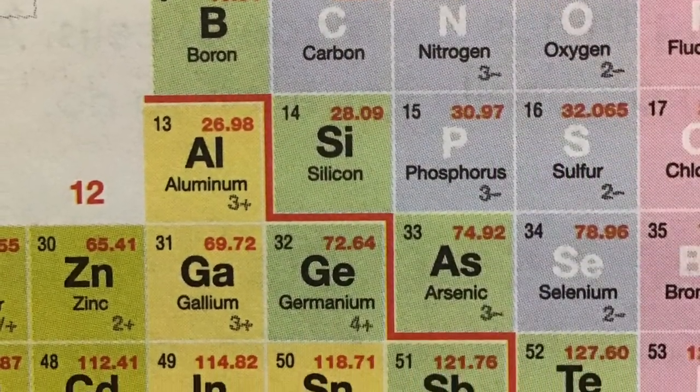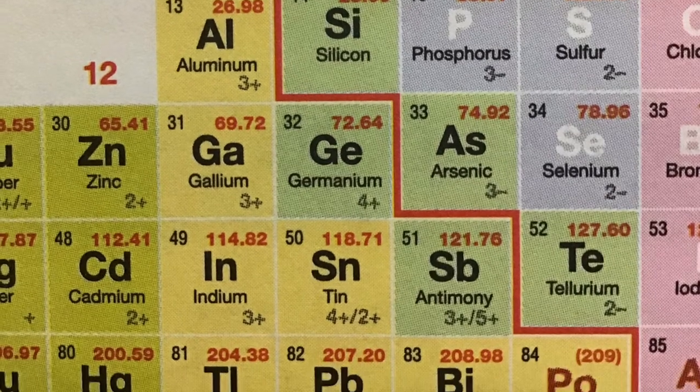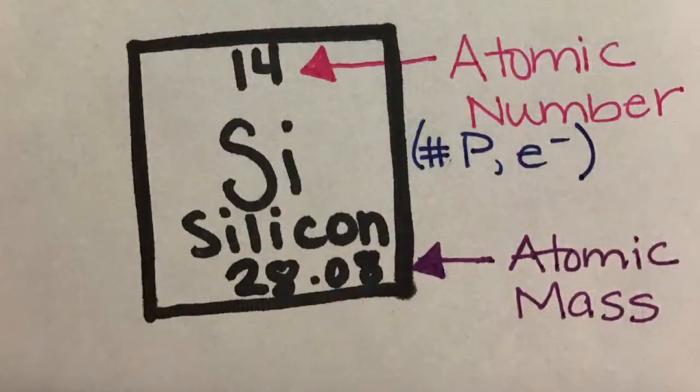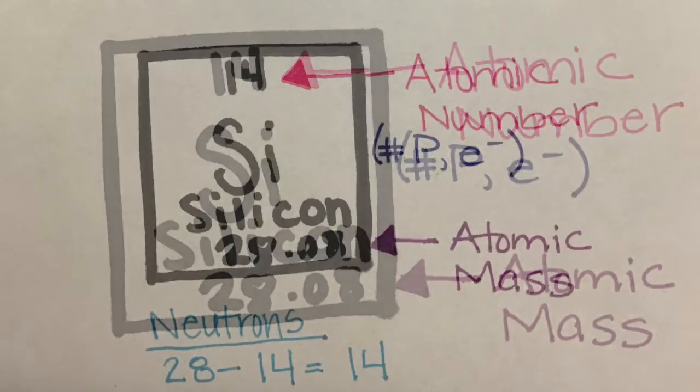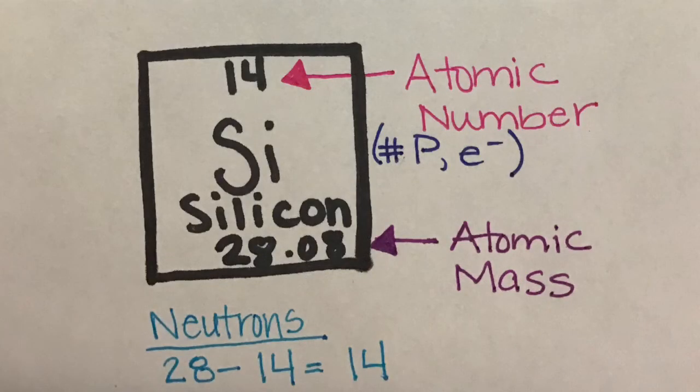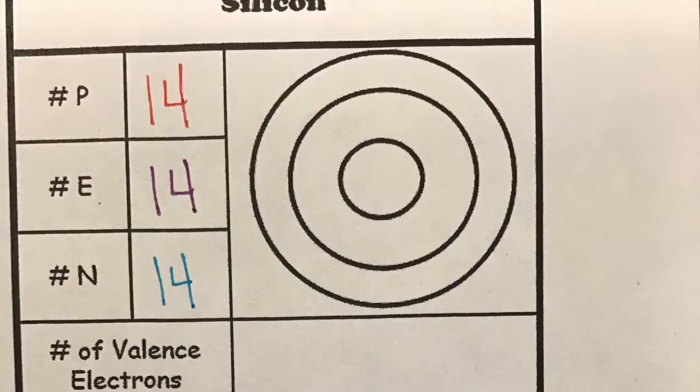Let's look at your last example, silicon. Silicon has an atomic number 14. This means that it has 14 protons and 14 electrons. Silicon has an atomic mass of 28.08 which we will round to 28. This means we have 28 the mass minus 14 the protons which equals 14 neutrons.